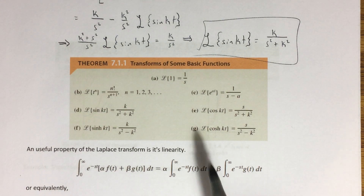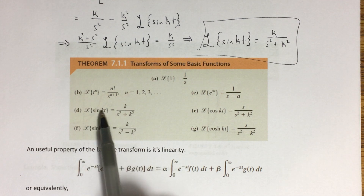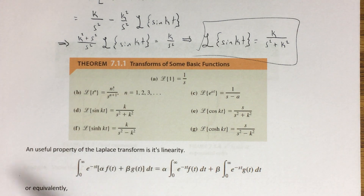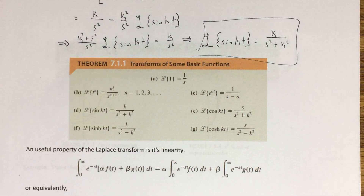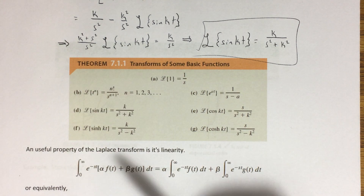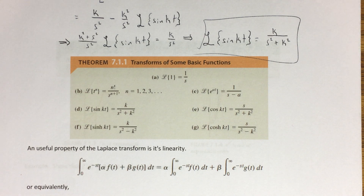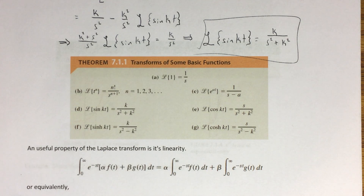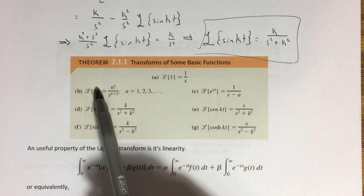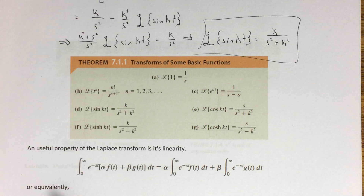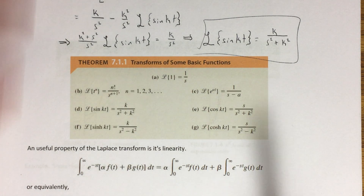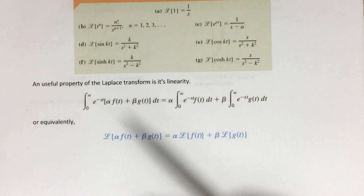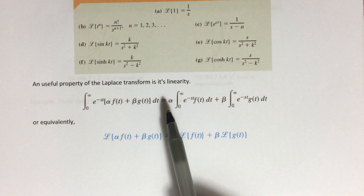Referring back to the Laplace transform table shown in the previous video, entry (d) is exactly what we just found: L{sin(kt)} = k / (s² + k²). We won't derive all entries because the derivations follow similar steps, but these are common and important transforms to know.